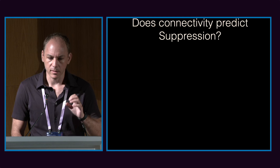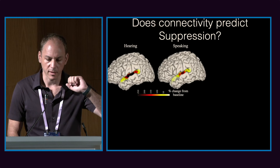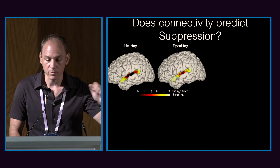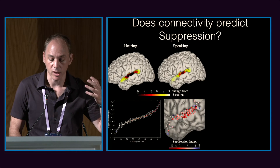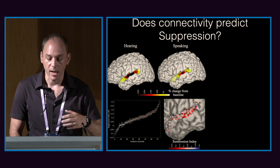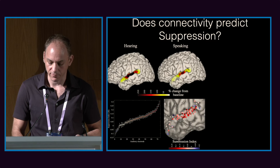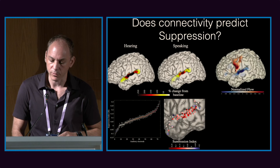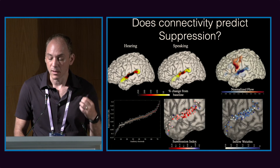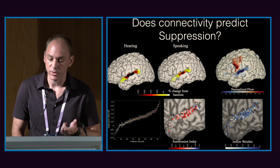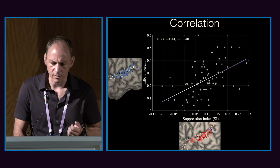To call it a corollary discharge, it has to be connected to actual suppression. So we quantified the degree of suppression by taking average activity during hearing 'balloon' versus saying 'balloon', creating a normalized index from negative one to one, where one is highly suppressed. Plotting all electrodes across participants, we see a wide spatial distribution. The key question is: do electrodes showing more suppression receive more information from the motor prototype? For every STG electrode we have both its degree of suppression and its degree of information inflow from motor cortex. We find a very robust correlation between the two.